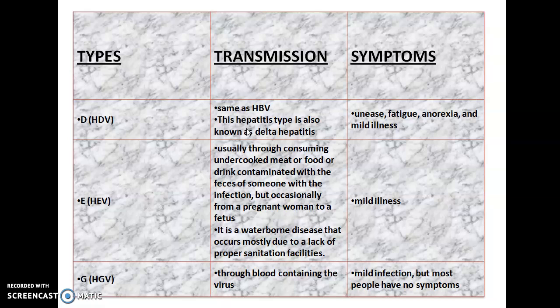If anyone has Hepatitis B and at the same time is also infected by Hepatitis D, then it is known as co-infection. But when a person is suffering from Hepatitis B and after some time is infected with Hepatitis D, it is known as super-infection. Symptoms include unease, fatigue, anorexia, and mild illness, but it can cause severe symptoms and severe illness that can lead to lifelong liver damage and even death.